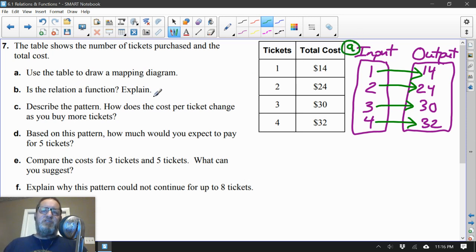Is the relation a function? Oh, right away I would say yes. Do you see why? Every input, remember the rule? Every input must be paired with exactly one output, and each one of these has one output. So yes. The explanation: every input has exactly one output.